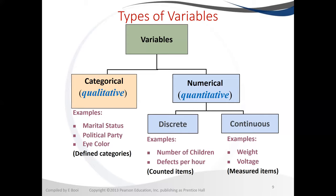So let's look at categorical variables. For example, we have marital status, political party, eye color. If I work in an insurance company and I have to issue insurance to people, sometimes you need to gather information to analyze the risk. You need to know whether they are married, do they have kids. Some of that data will be categorical, like marital status.